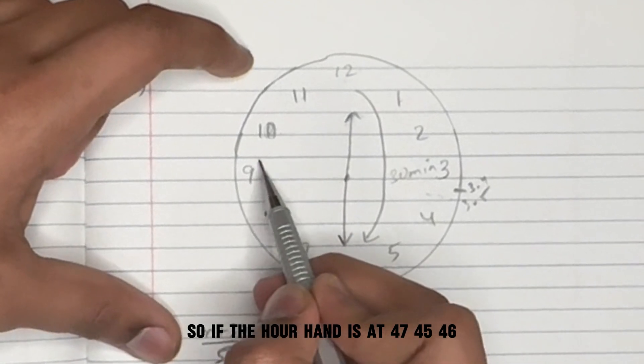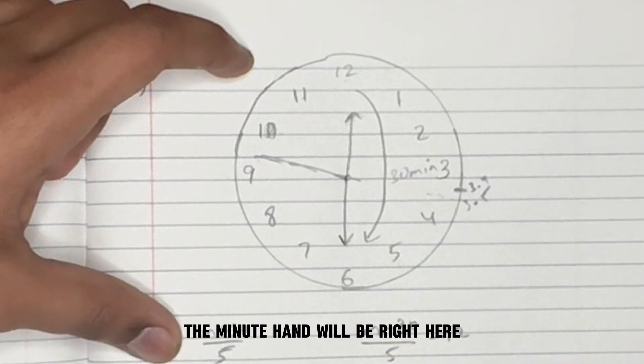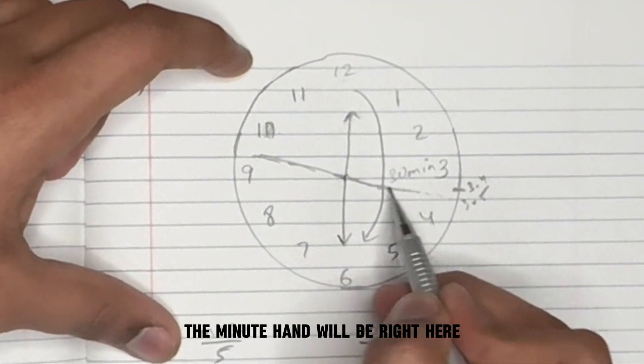So if the minute hand is at 47, 45, 46, 47, right here, the hour hand will be right here.